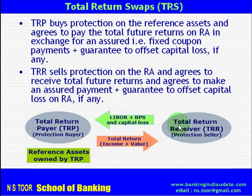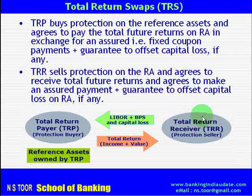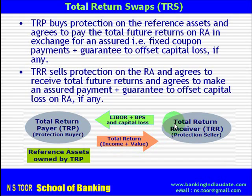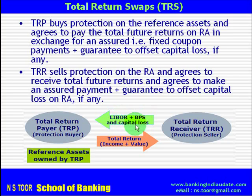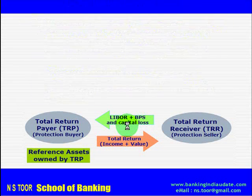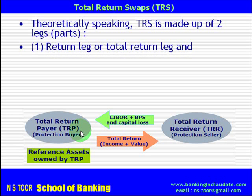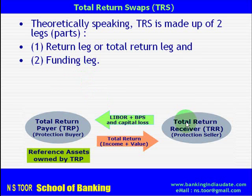In return, TRP agrees to receive from the Total Return Receiver some interest in the form of LIBOR plus basis points, and assurance against capital loss if any on the reference asset. TRR agrees to receive the total return from TRP and in return pays LIBOR plus basis points and assurance against capital loss. Theoretically, TRS is made up of two legs: the Return Leg and the Funding Leg.